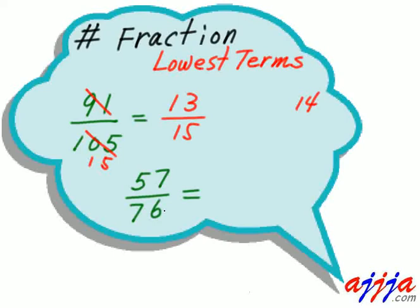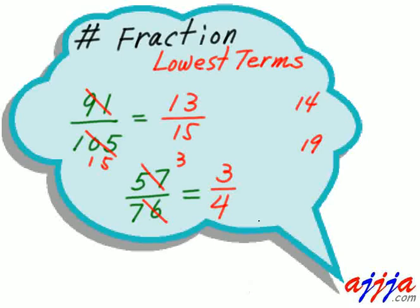What about fifty-seven over seventy-six? Subtract this one minus this one — that's nineteen. Maybe nineteen goes here: fifty-seven divided by nineteen is three times, and seventy-six divided by nineteen is four times. That's why the answer is three over four. See how easy it is!